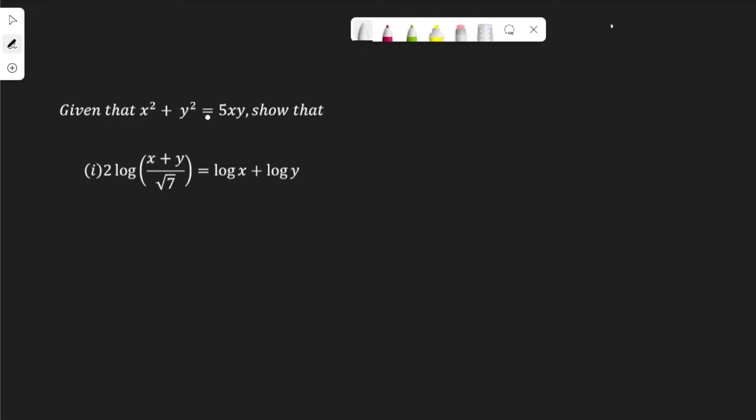Given that x squared plus y squared is equal to 5xy, show that 2 log of (x plus y) over root 7 is equal to log x plus log y.